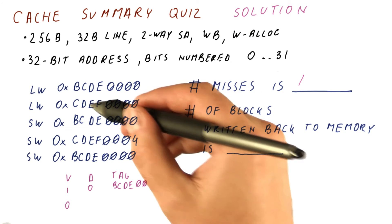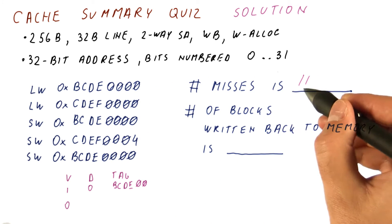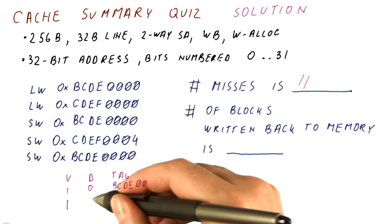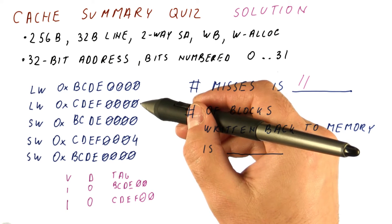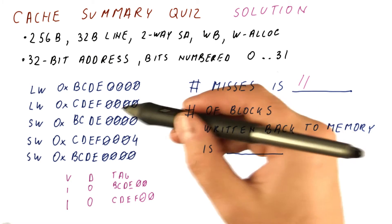The next access is C, D, E, F. It's going to be a miss, and we'll fetch it into the other entry here. The dirty bit is zero because this is a load.